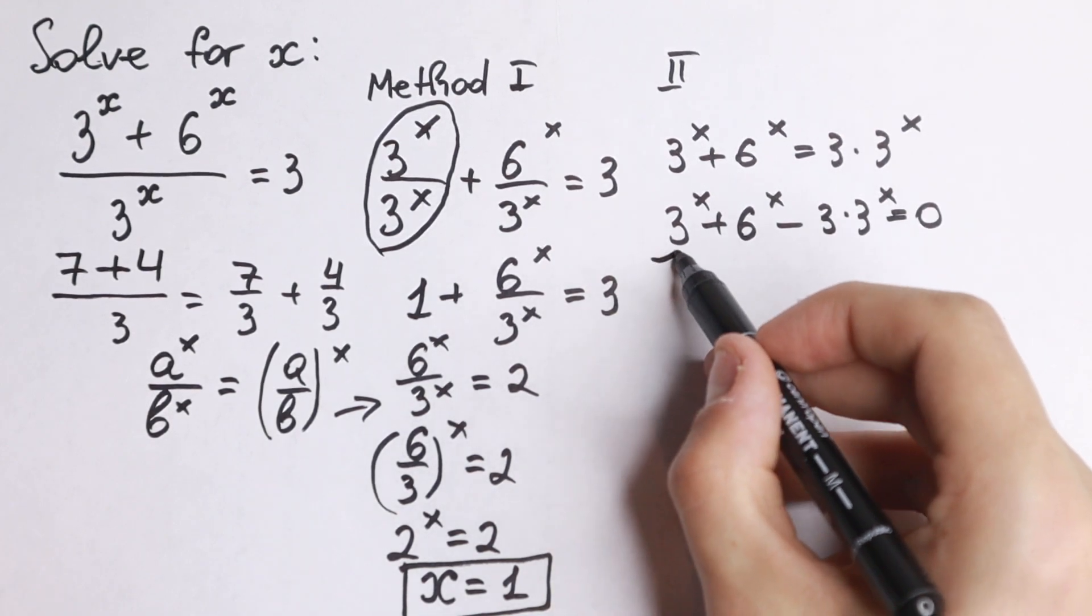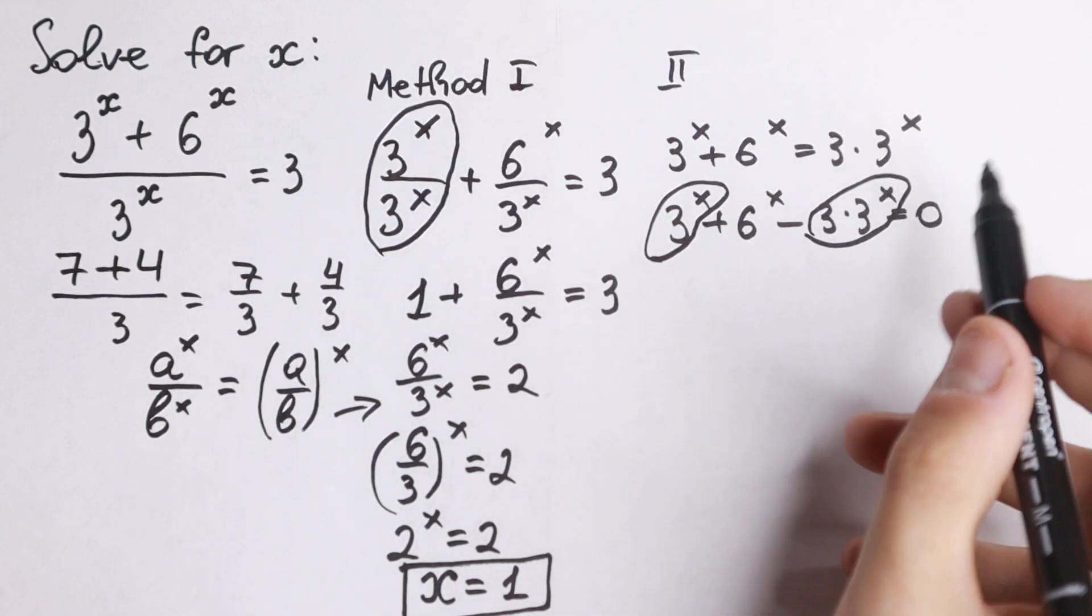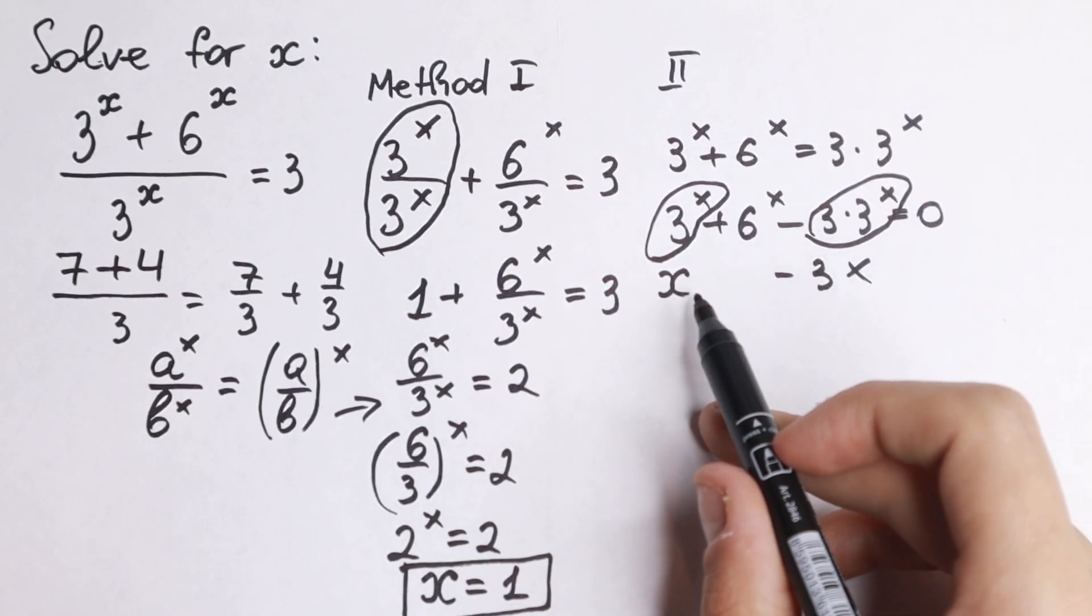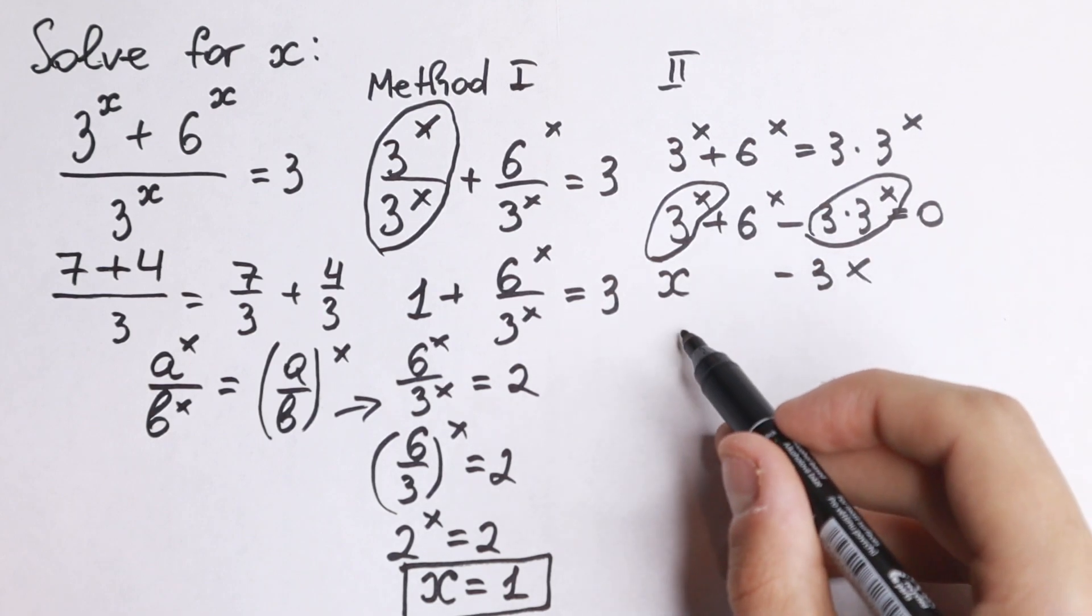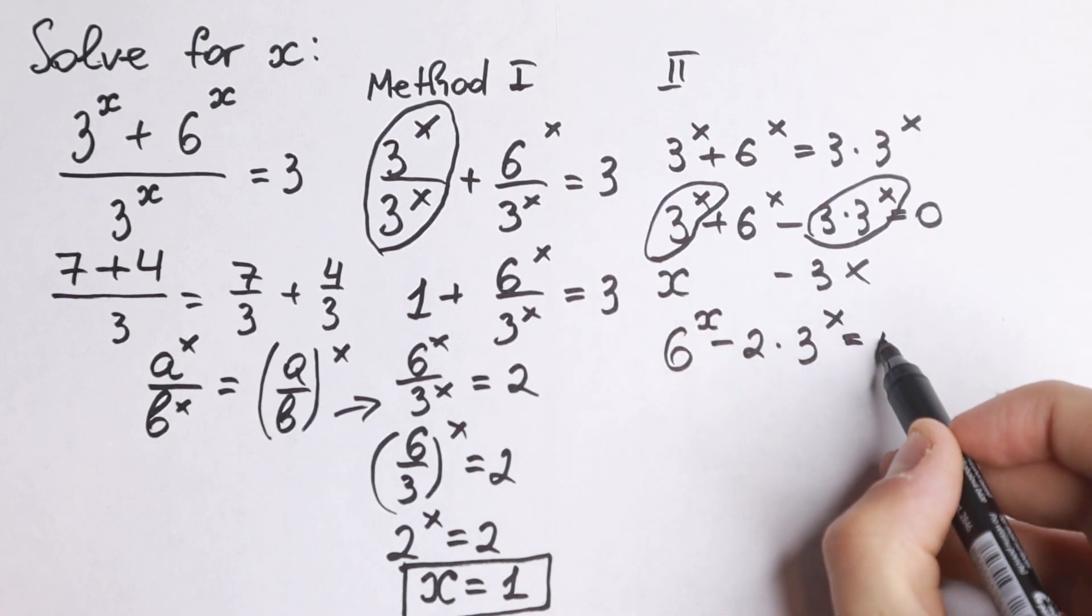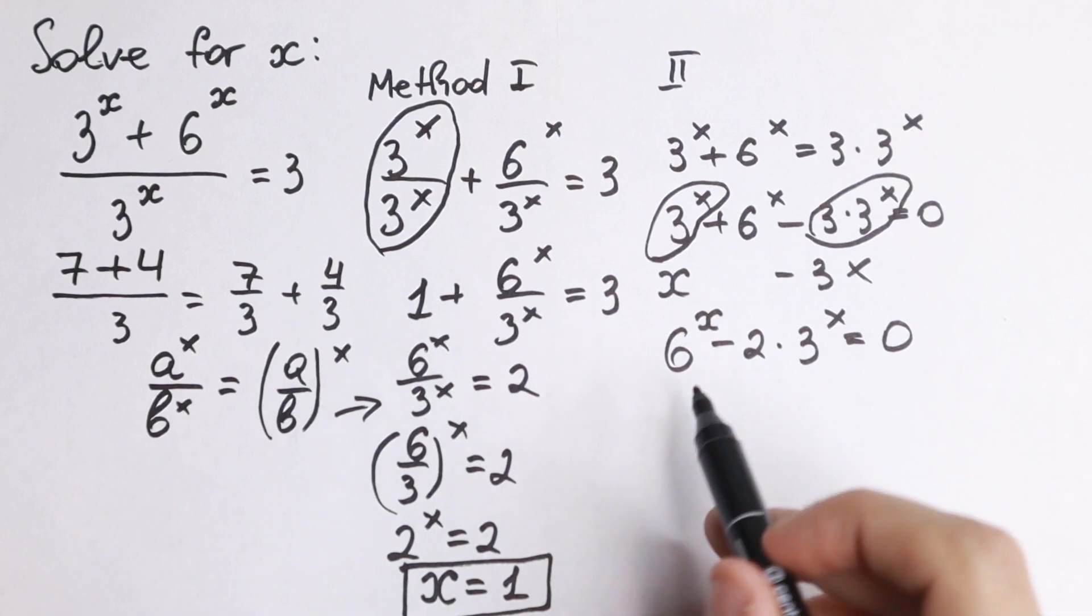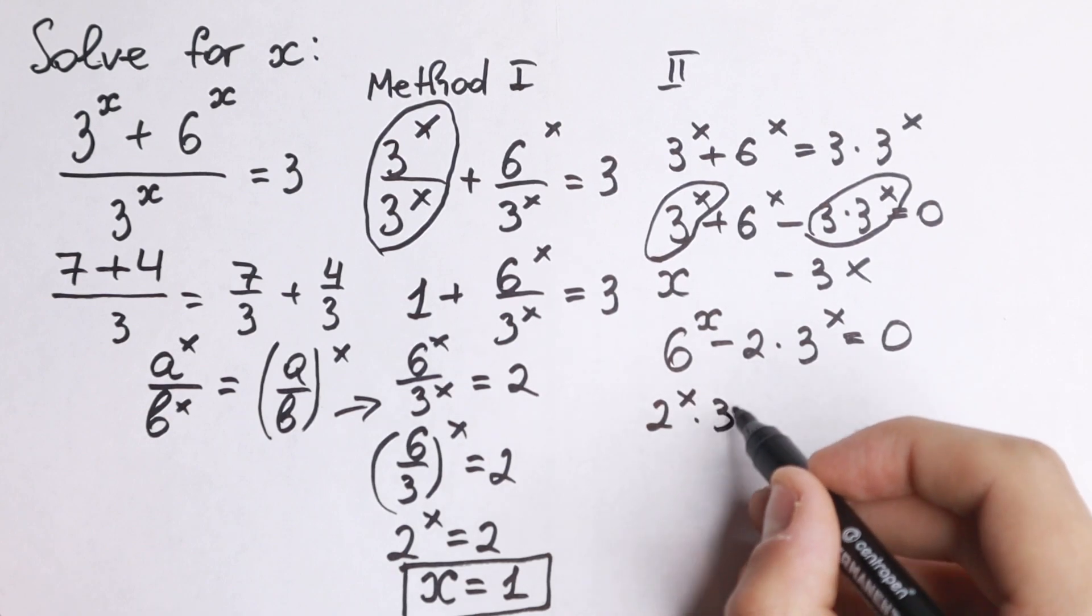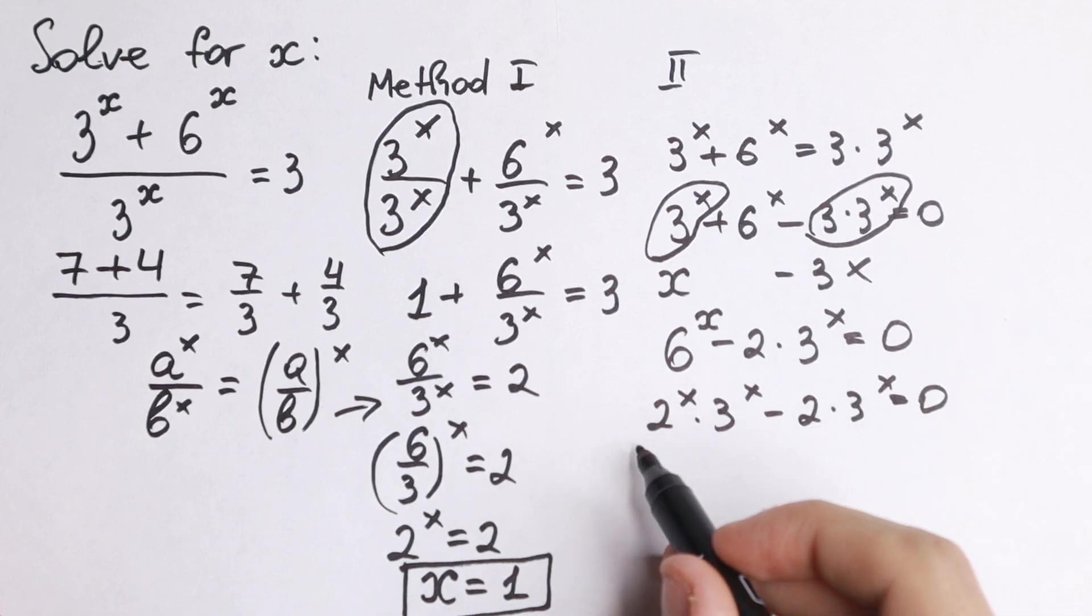As you can see we have 3 to the x minus 3 times 3 to the x. This looks like x minus 3x. If we subtract it, we will have minus 2x, but x in our case is equal to 3 to the x. So we'll have 6 to the x minus 2 times 3 to the x equal to 0. 6 to the x can be written as 2 times 3. We'll have 2 to the x times 3 to the x minus 2 times 3 to the x equal to 0.